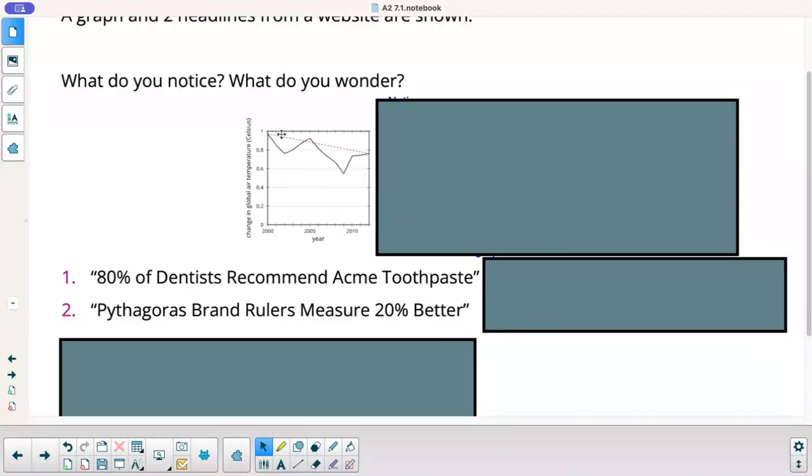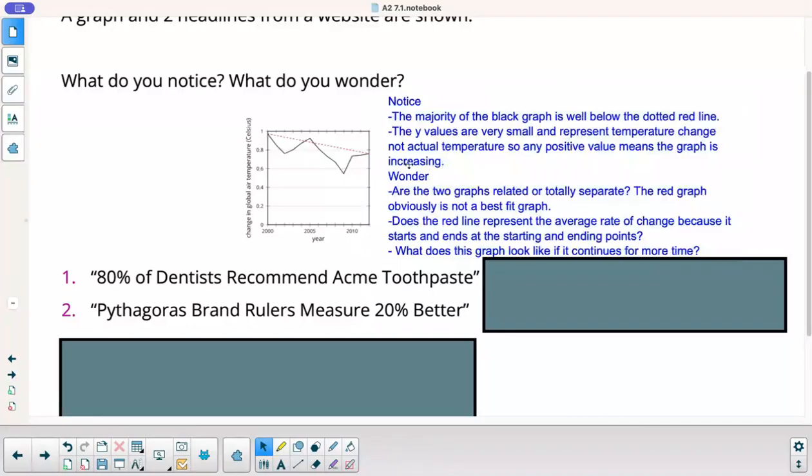It looks more like an average rate of change because it starts at the starting point and ends at the ending point. The majority of the black graph is well below the red dotted line. But the y-values are very small. Look at the y-axis. See how they only go by 0.2 there? And they represent temperature change. Change in global temperature. So when it means temperature change and not the actual temperature, any positive value here actually means that the temperature is increasing. In order to decrease, it would have to dip below zero, be negative. So although it looks like it's going down, the temperature is still increasing.